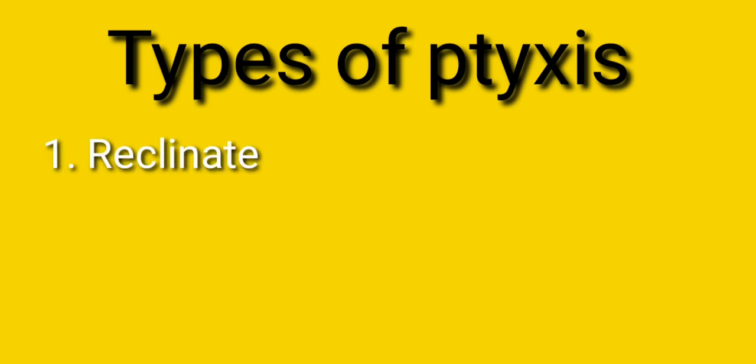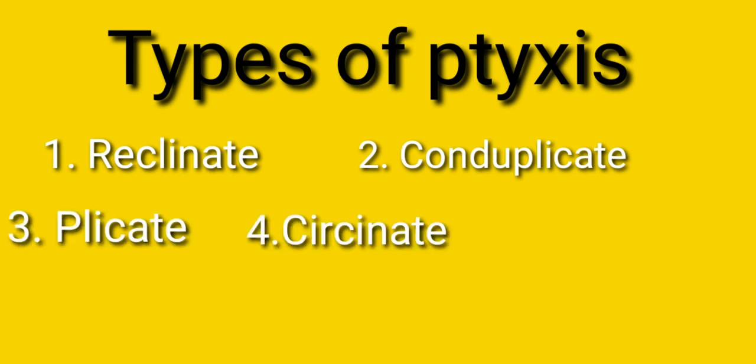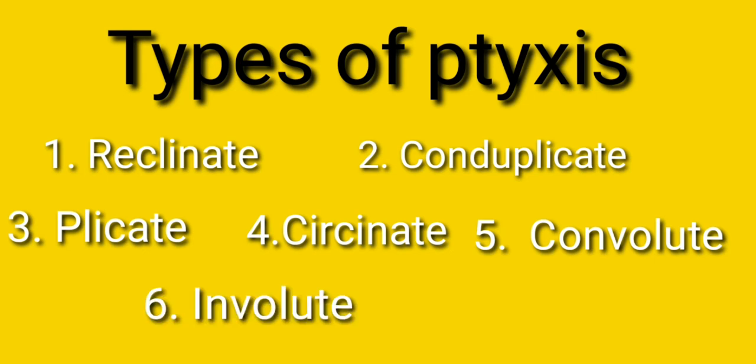The seven types are: reclinate, conduplicate, plicate, sarsinate, convolute, involute, and crumpled.